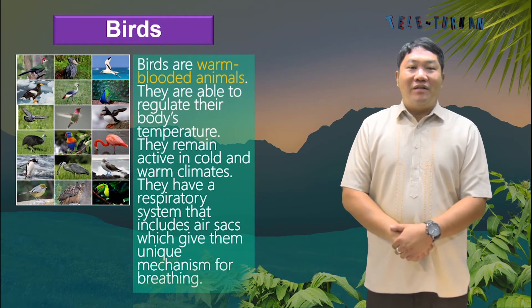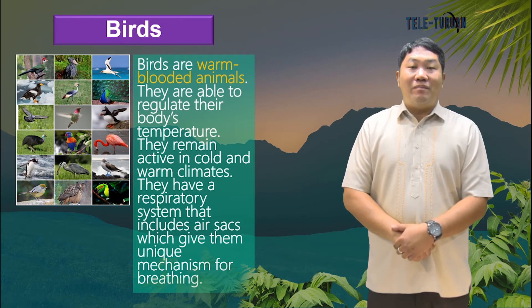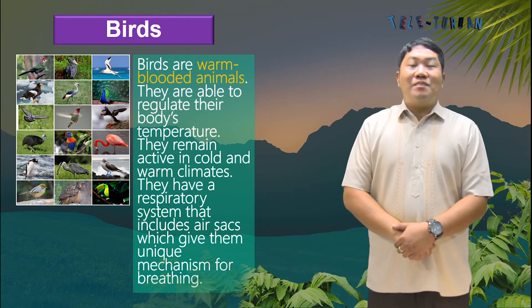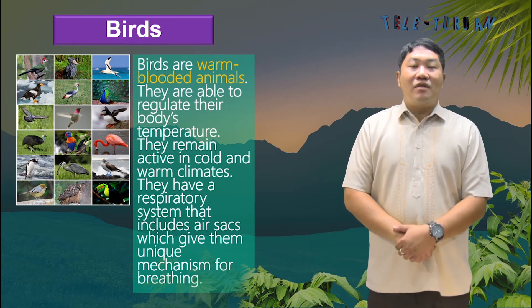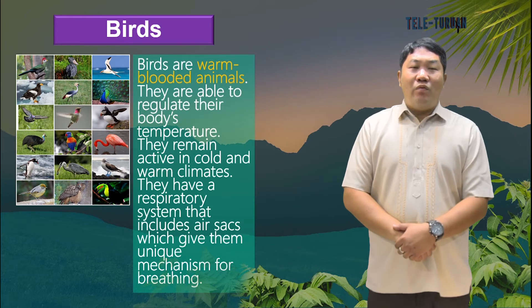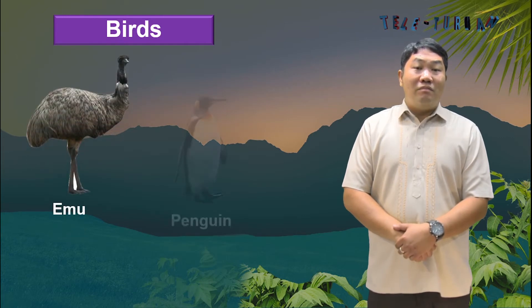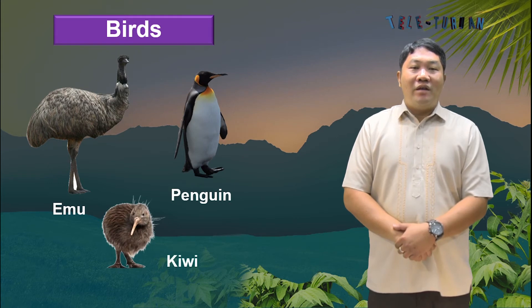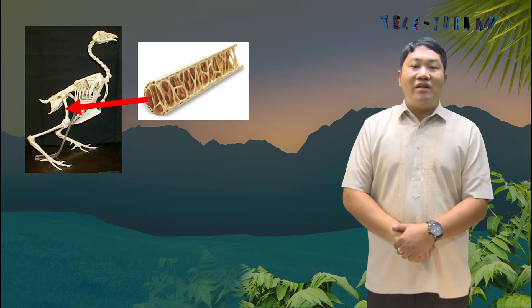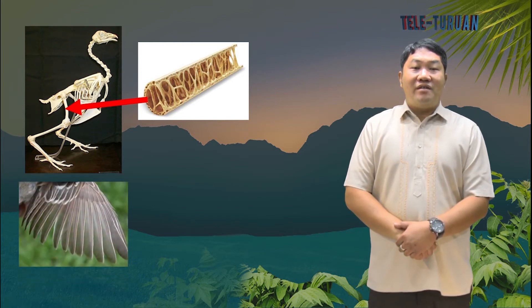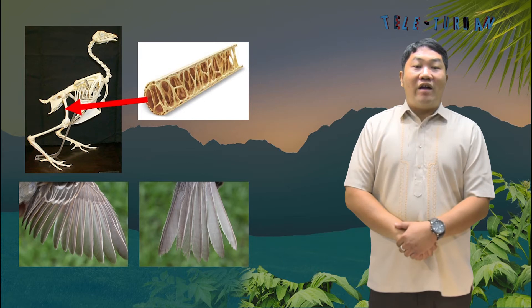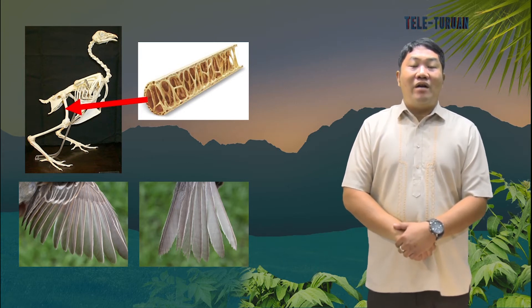Birds are warm-blooded animals. They are able to regulate their body temperature and remain active in cold and warm climates. They have a respiratory system that includes air sacs, which give them a unique mechanism for breathing. Most birds can fly, with a few exceptions such as emus, penguins, and kiwis. Even chickens can fly short distances. This is because birds have very light bodies which consist of hollow bones. They also possess flight feathers found in wings and tails, arranged in a way that helps carry and lift the bird up in the air.